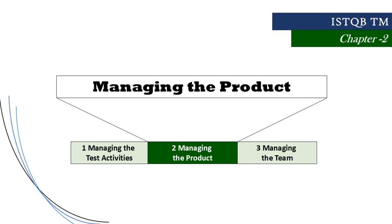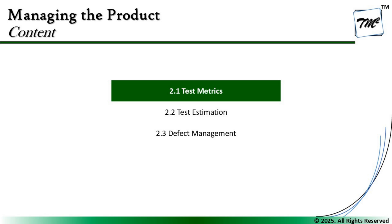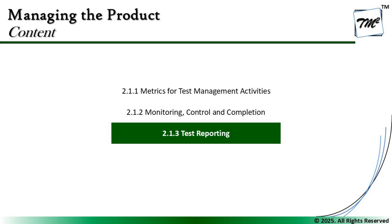Hello friends and greetings for the day. Welcome back to another tutorial on ISTQB Advanced Level Test Management Certification. We are in Chapter 2 talking about managing the product, still with segment 2.1 on test metrics. Today we shall be covering segment 2.1.3 — test reporting — and understanding the various matrices used on different primary dimensions and how they can be applied for various dimensions of testing.